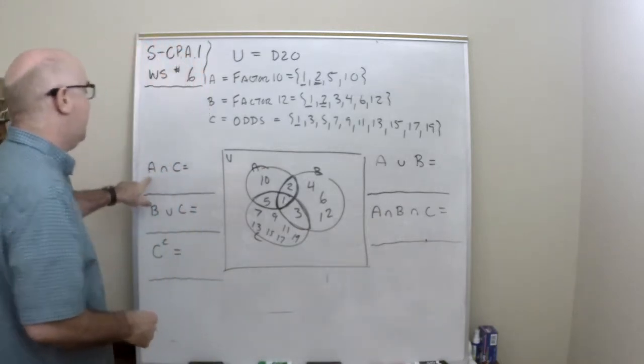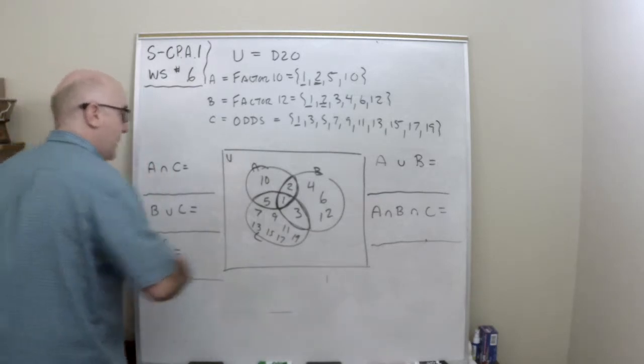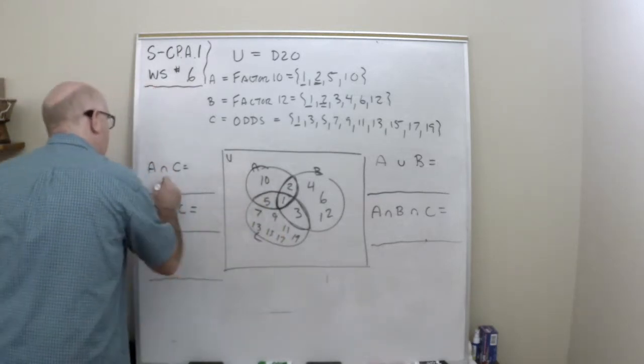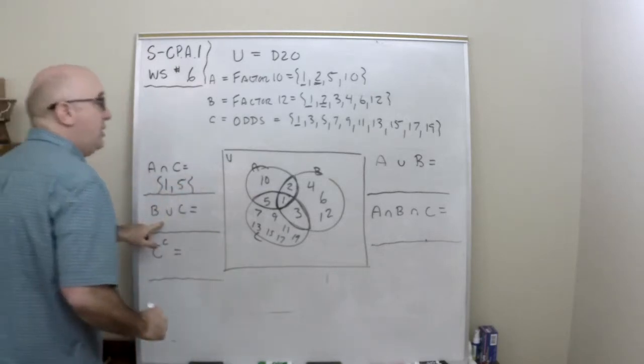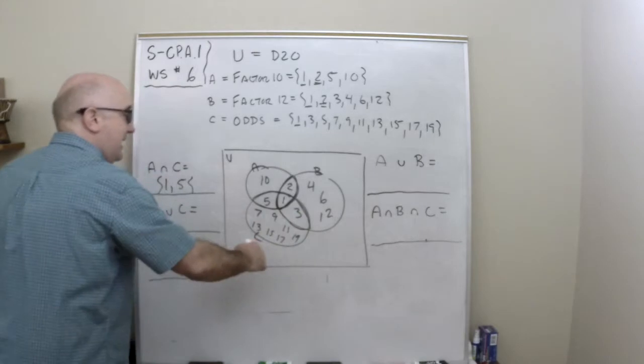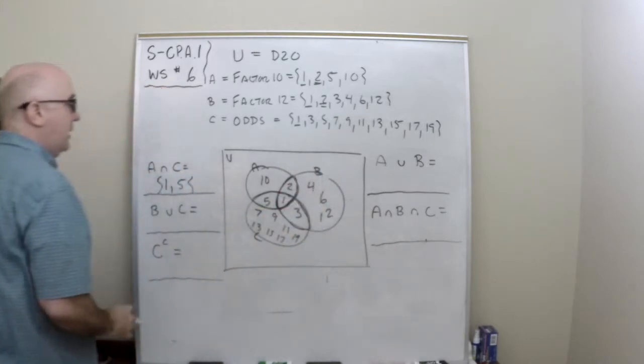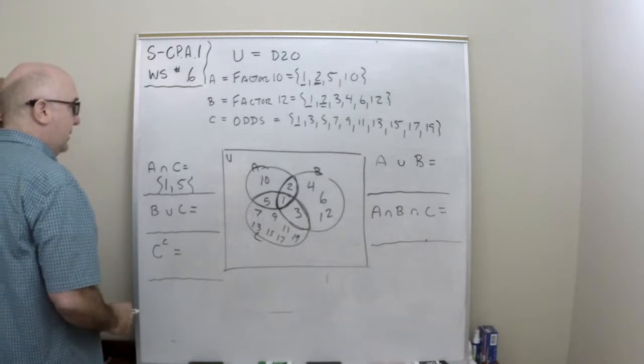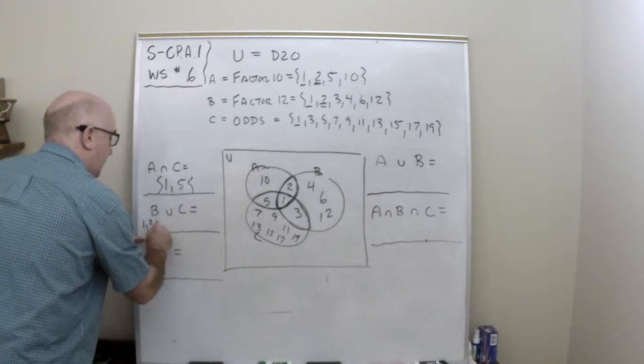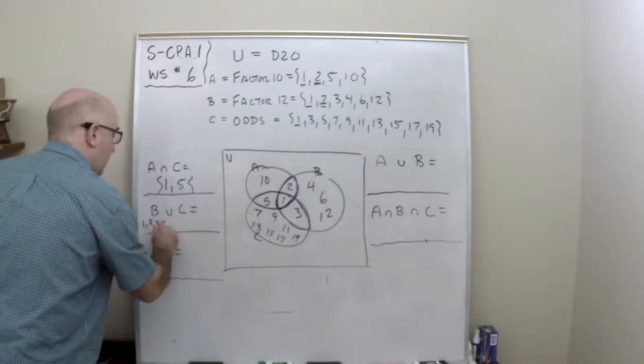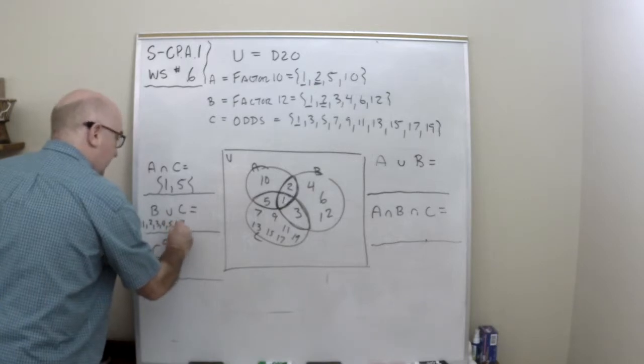So this says what's in the intersection, the little n symbol, between A and C. A and C is just the 1 and the 5. What's the union of B and C? Now union means to combine everything in there. So it would be a 1, a 2, a 3, a 4, a 5, a 6, a 7.